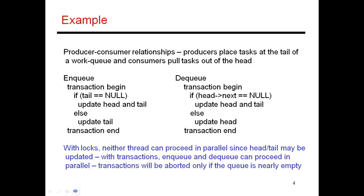I had gone through this example last time with multiple different threads producing and consuming tasks. These enqueue and dequeue functions can proceed in parallel for the most part. It's only when the queue is really small that they both happen to touch the same variable, and the hardware will detect that and abort one of the transactions.